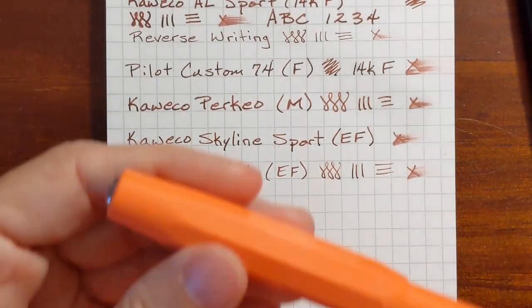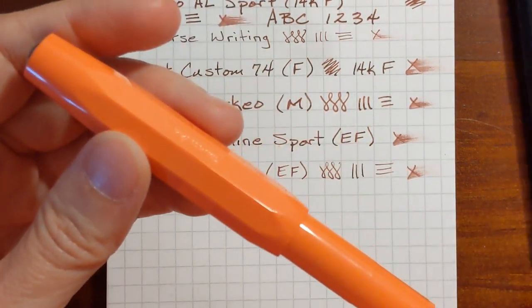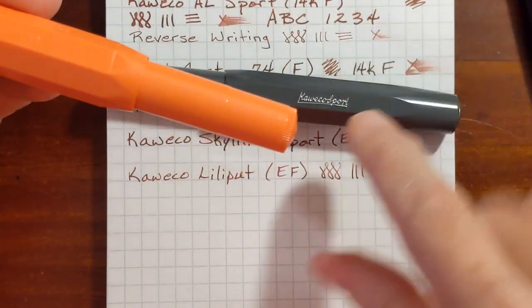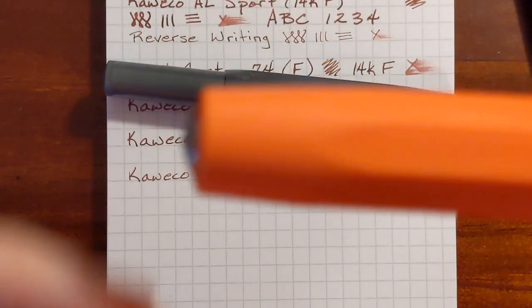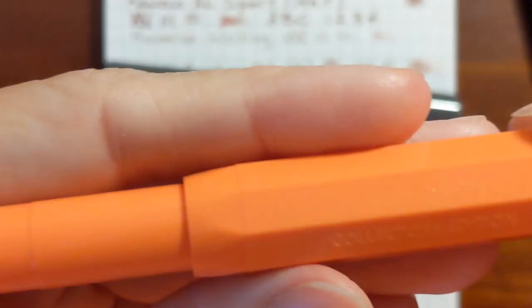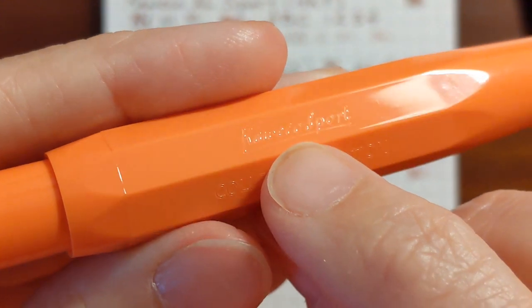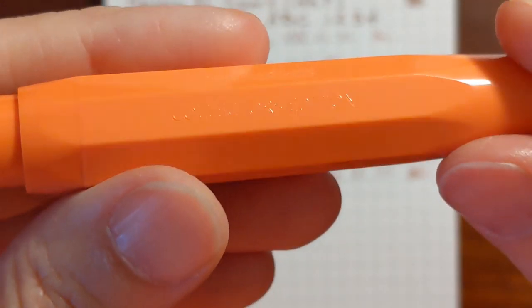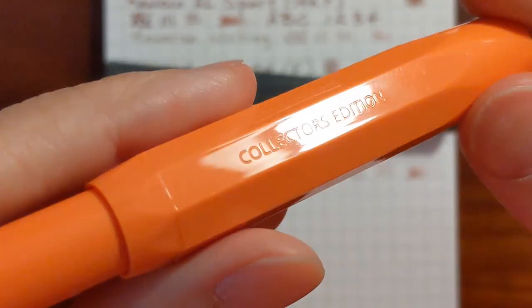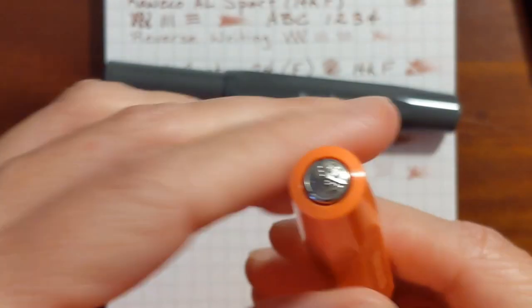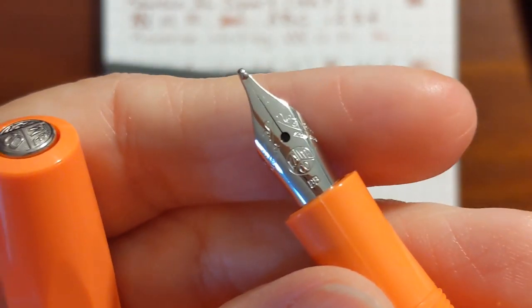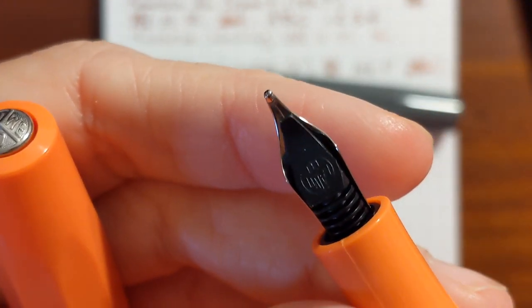So it's similar, it's plastic like my Skyline sport but instead of having the silver printing, let's see, there's Kaweco sport and it says collector's edition. It's a nice pen and it's got the silver trim.